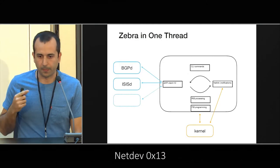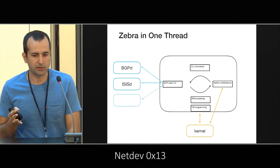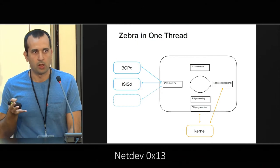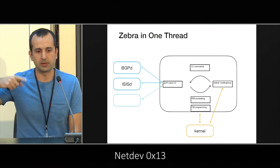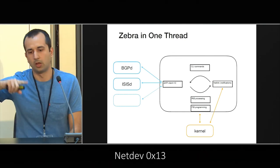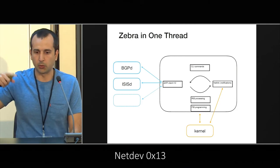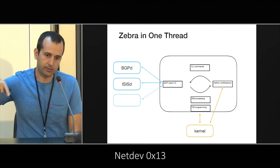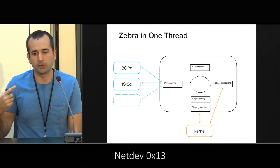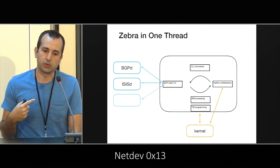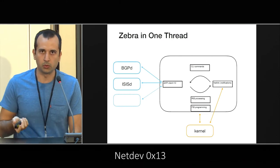This is how Zebra looked before around 2019. Everything was single-threaded. Various daemons were talking to Zebra through their ZAPI sessions. There was a single thread recording those messages and figuring out what to do. That same single thread was also intercepting CLI commands, receiving notifications from the kernel, and doing the actual route processing — selecting the best route and pushing it to the forwarding plane.